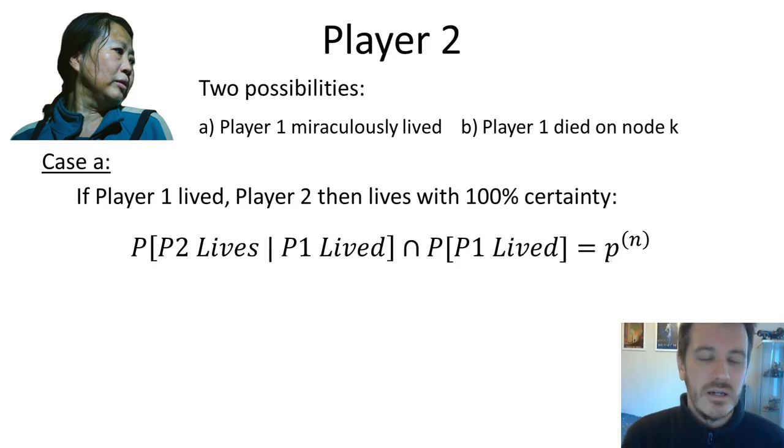The second and far more likely scenario in the case of player 2 is that player 1 died somewhere on node K. And we're going to solve each of these two cases separately and then glue the probabilities together because they are obviously distinct. Player 1 has either lived or died and there's no other potential possibility for player 1. So in case A, we simply carry forward the probability that player 1 lived, which is p to the n, or as we saw before, 0.5 to the power of 18. So we'll put that to one side. We can think of case A as the free roll.